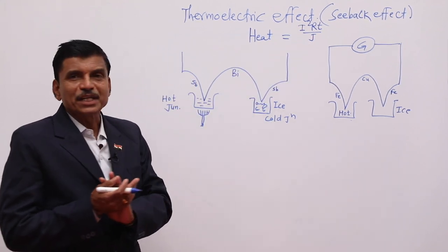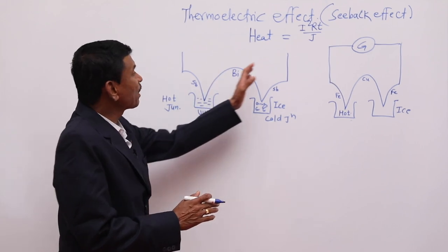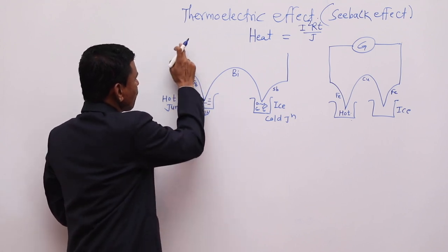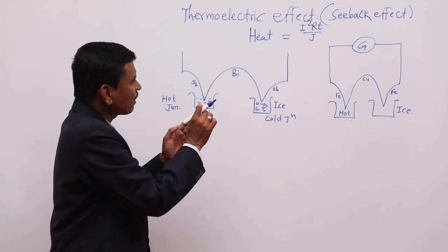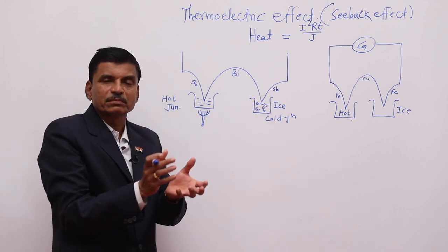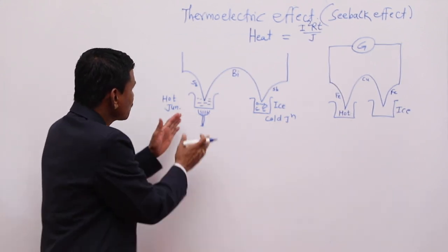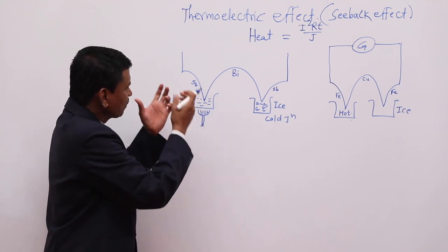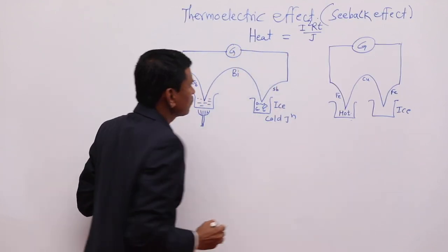Scientist Seebeck decided to convert heat energy into electric energy. He took two dissimilar metals — antimony and bismuth. A wire of antimony and a wire of bismuth are connected at two ends, forming two junctions. One junction is kept in ice, so it is the cold junction at 0°C. The second junction is kept in hot water or heated oil, making it the hot junction. He then connected a galvanometer between the two junctions.